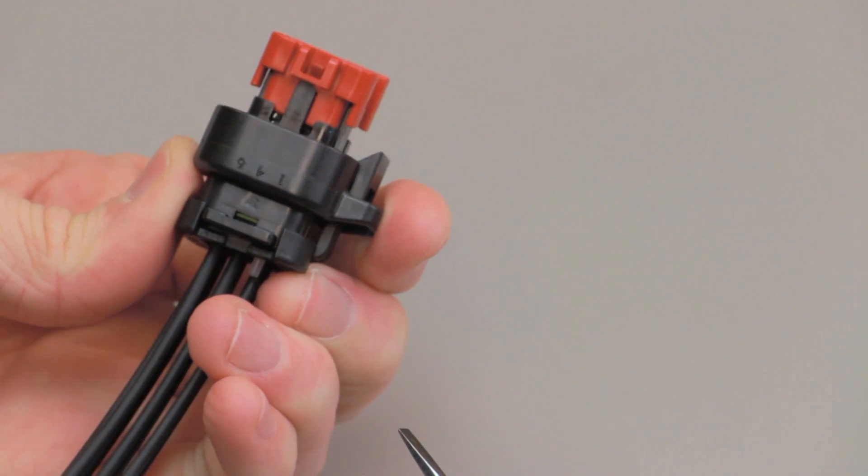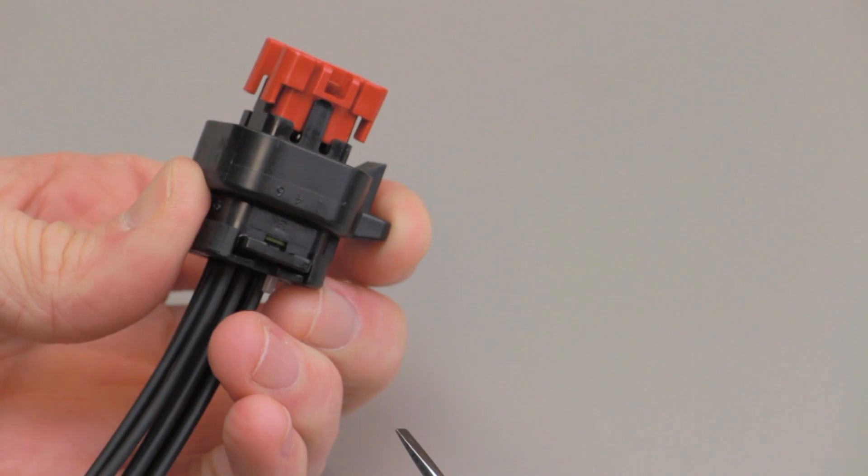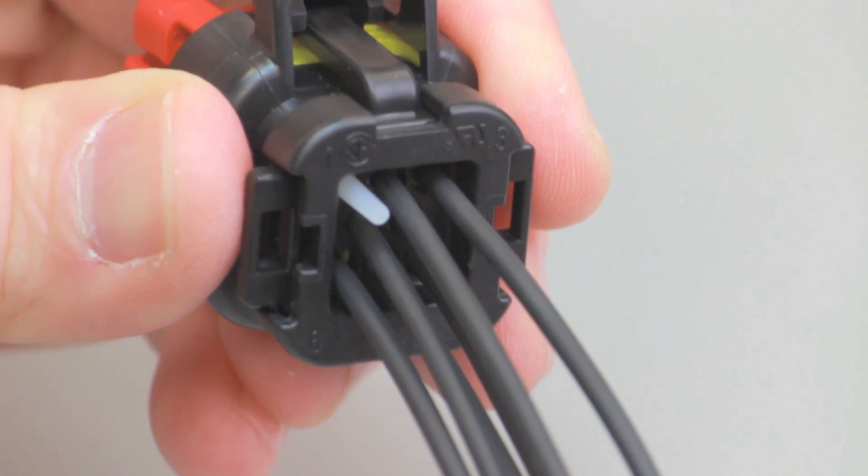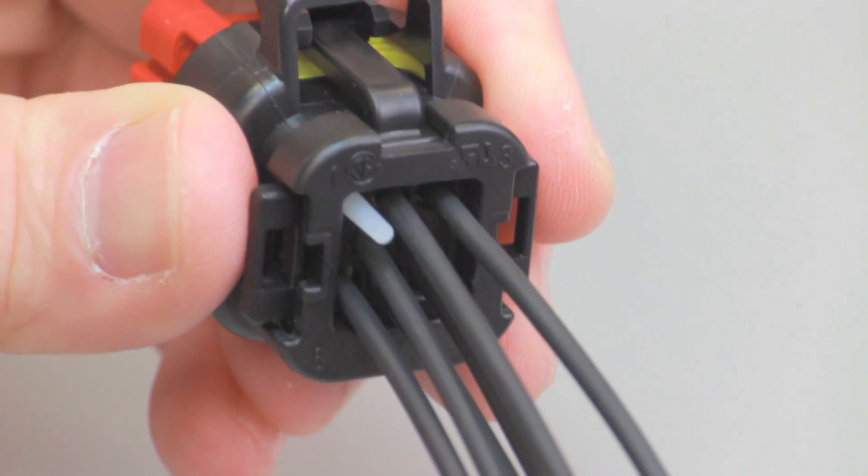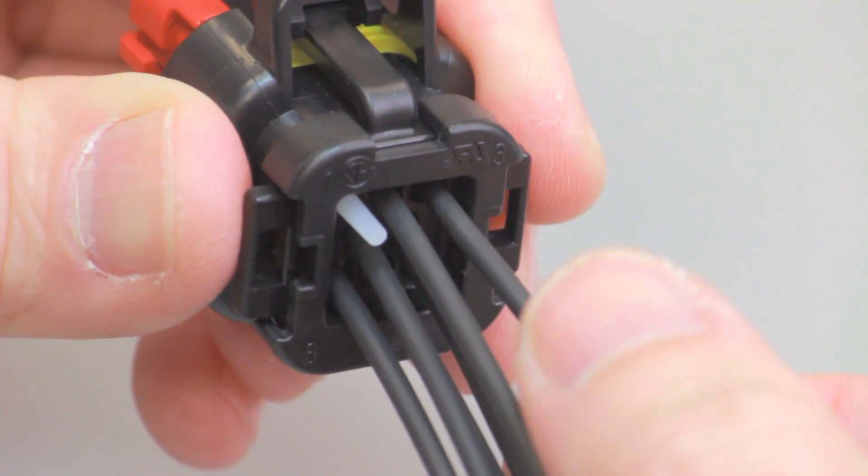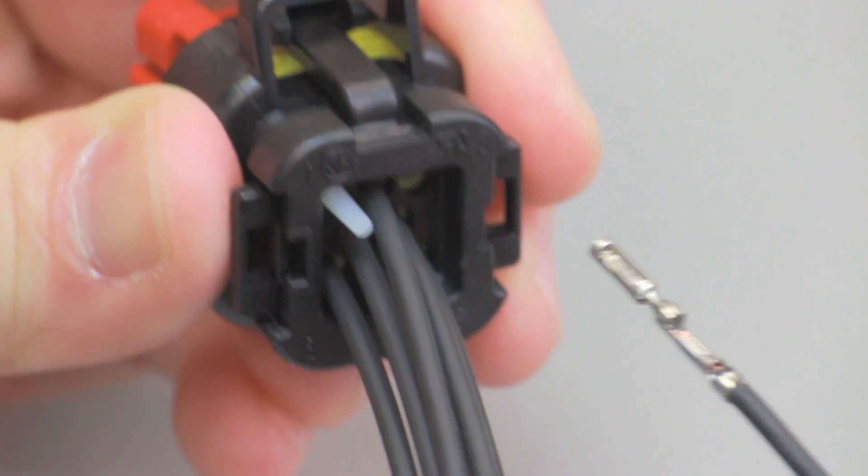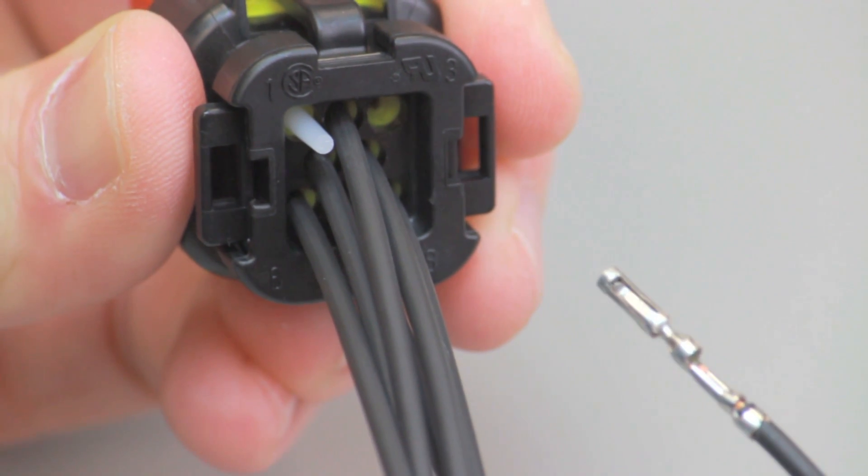If necessary, repeat the process for the opposite corner of the wedge. To remove the contacts from the receptacle contact housing, rotate the wire back and forth over a half turn while gently pulling the wire until the contact is removed. Repeat this process until all of the contacts have been removed.